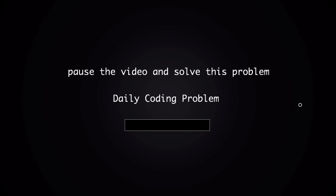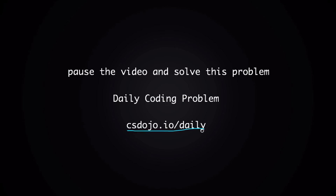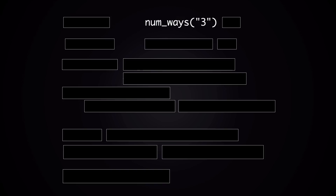Pause the video here if you want to try solving this problem yourself. By the way, this problem came from a website called Daily Coding Problem — you can get more problems like this through my referral link csdojo.io/daily. Anyway, here's my solution. I would first think about simpler examples. For example, if you're given '3' as the input, there's only one message that can be encoded into 3, and that's simply the letter C, so the function should return 1.